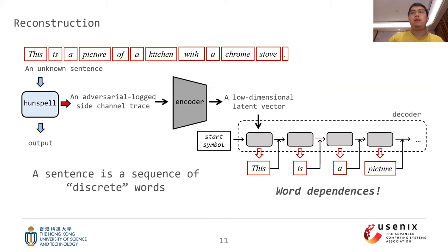Textual data, namely sentences, are quite different from images and audios. Since there is no intermediate word, a sentence is a sequence of discrete words. Accordingly, the lower-dimensional manifold for textual data primarily encodes its word dependency. Therefore, we explore reconstructing sentences using a recurrent neural network. Based on the word dependency, a sentence can be reconstructed by iteratively predicting the next word.